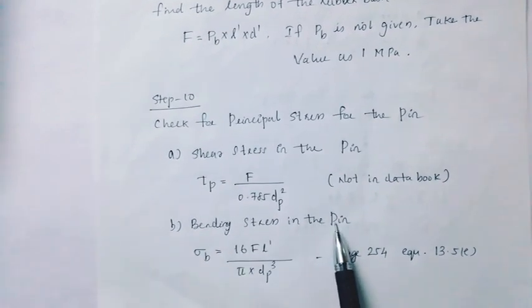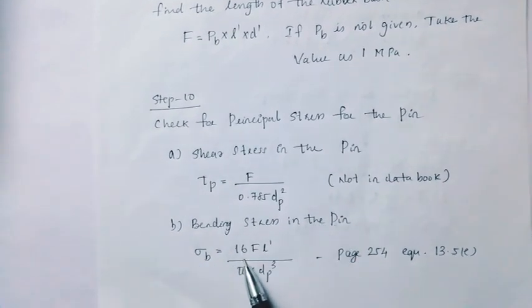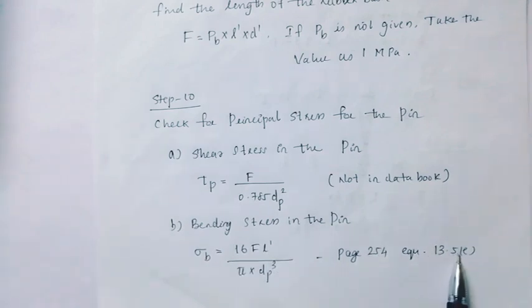Next, bending stress in the pin. Sigma b equal to 16f into l dash divided by pi into d cube p. Page number 254, equation 13.5E.